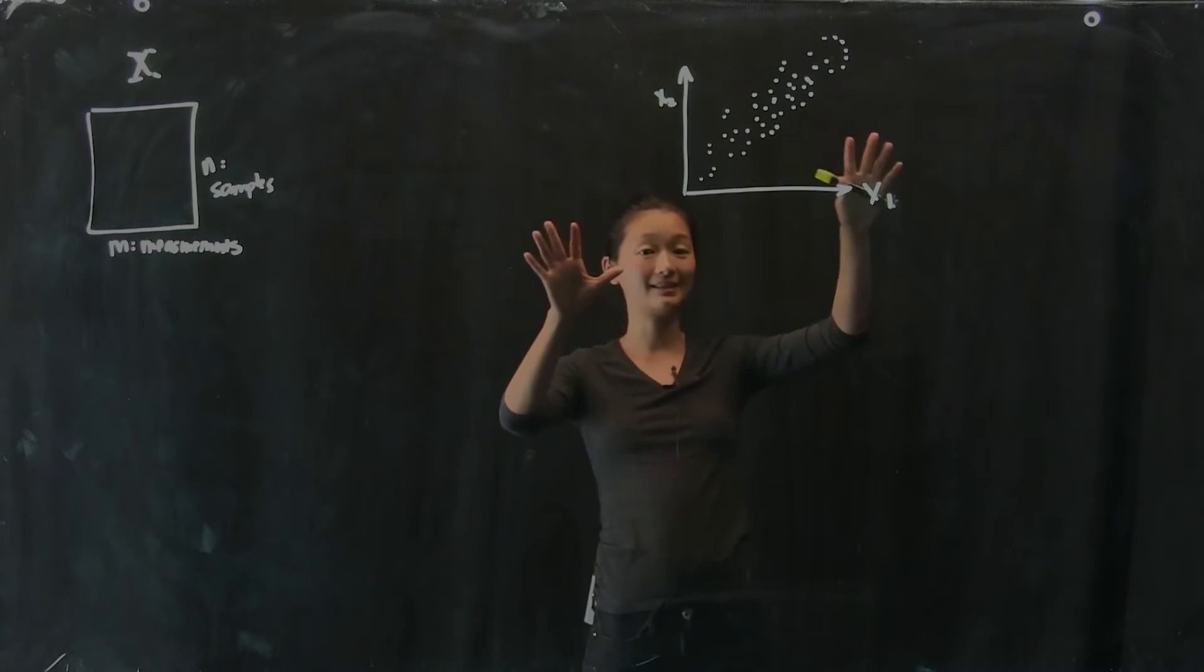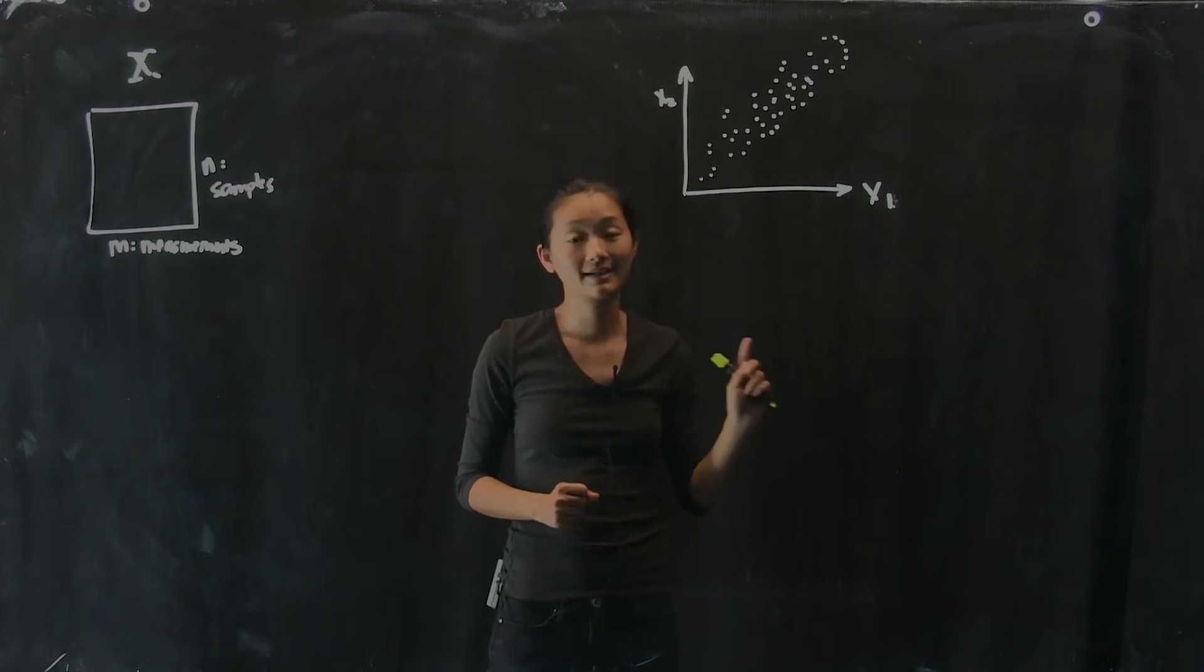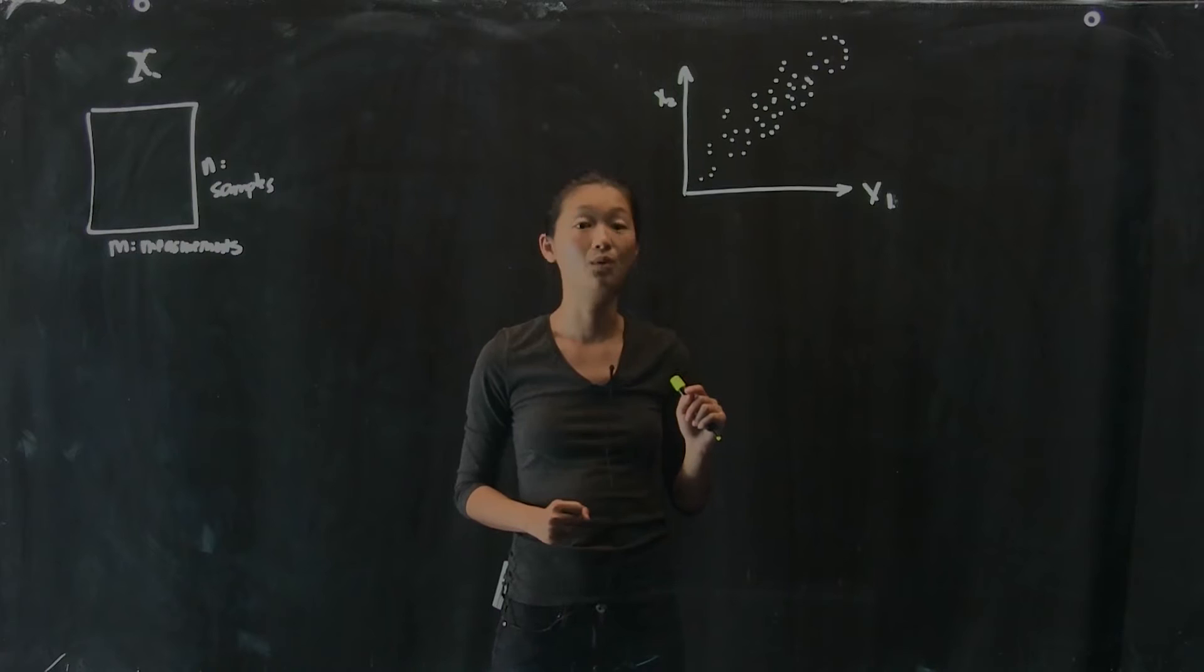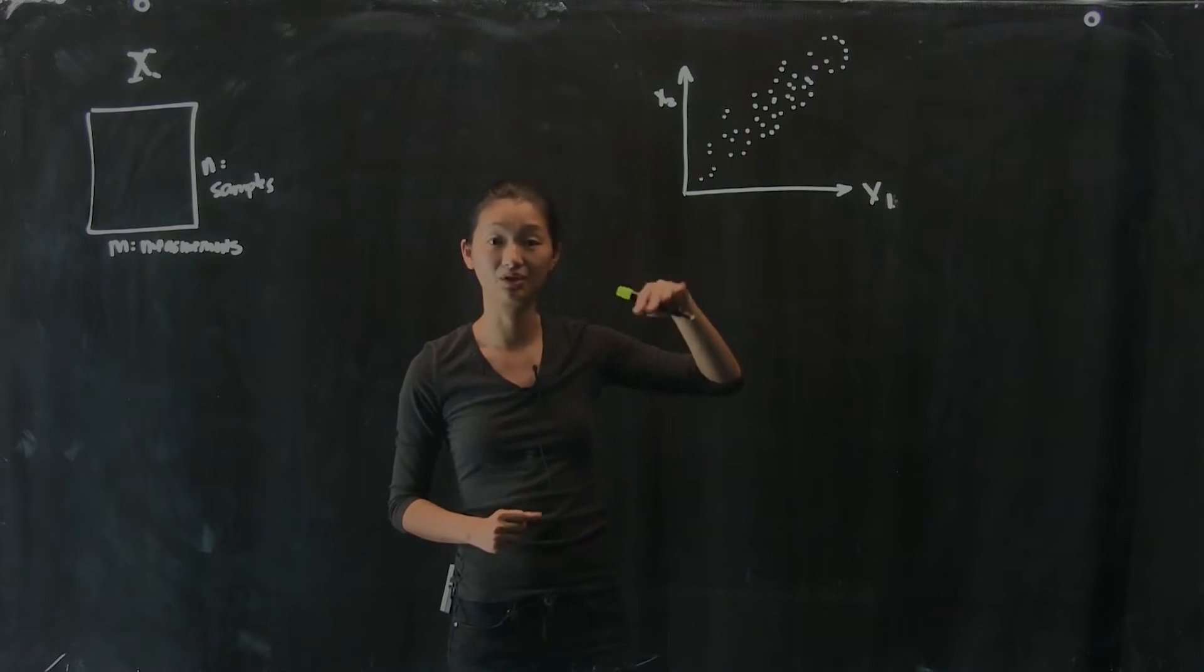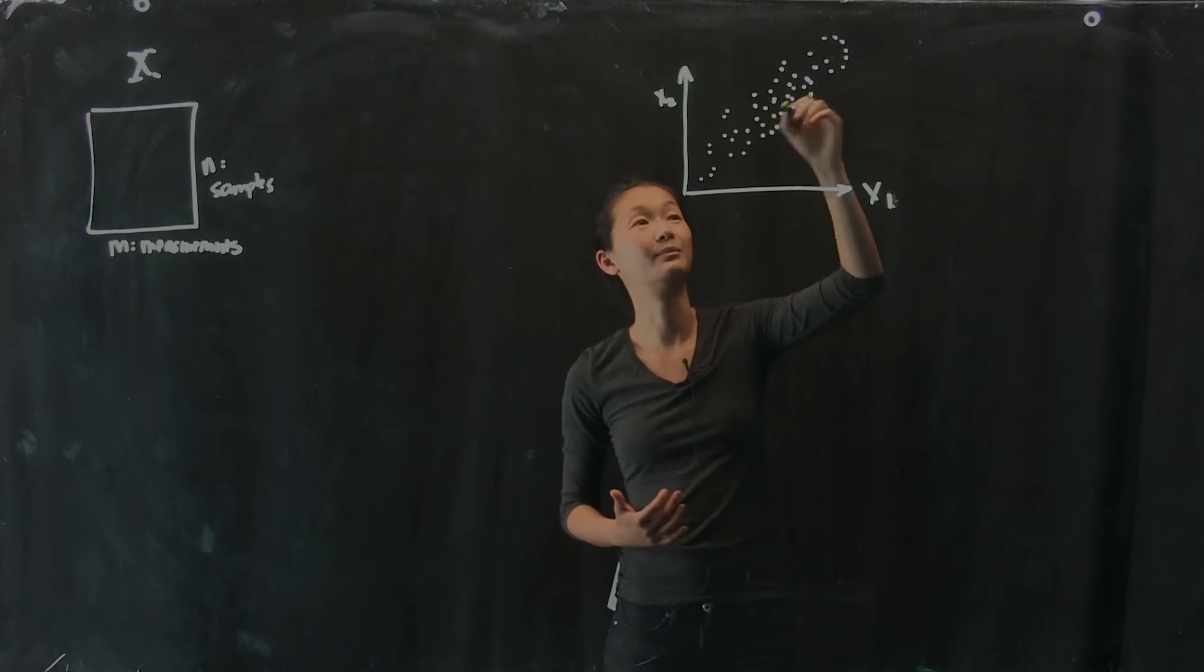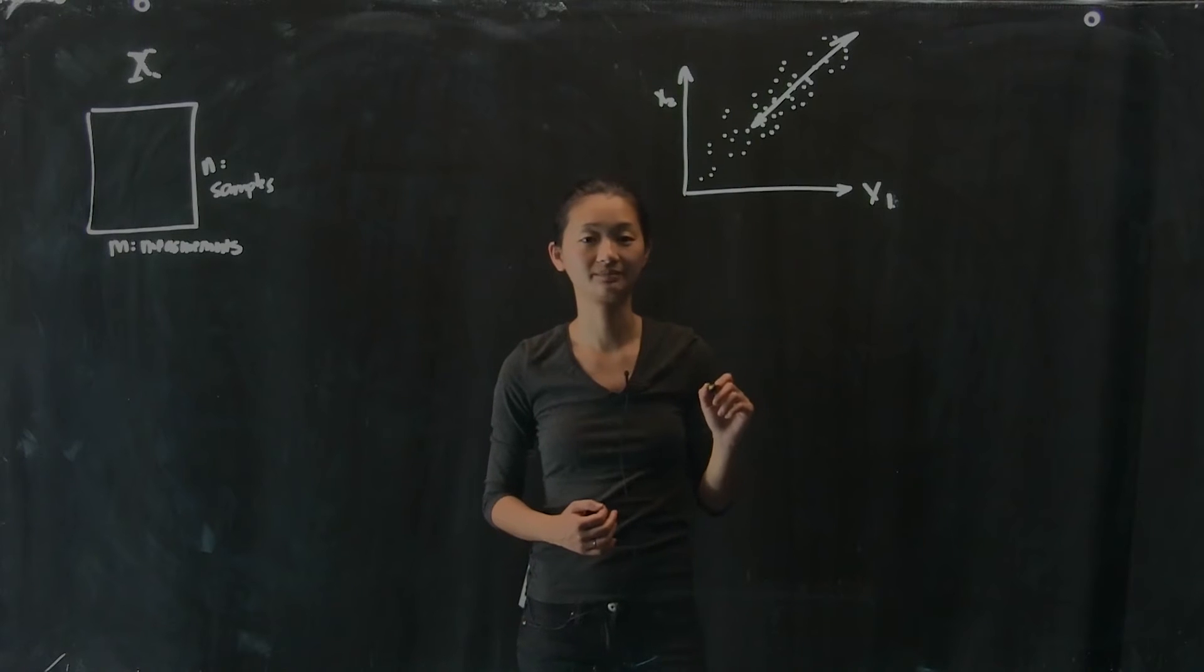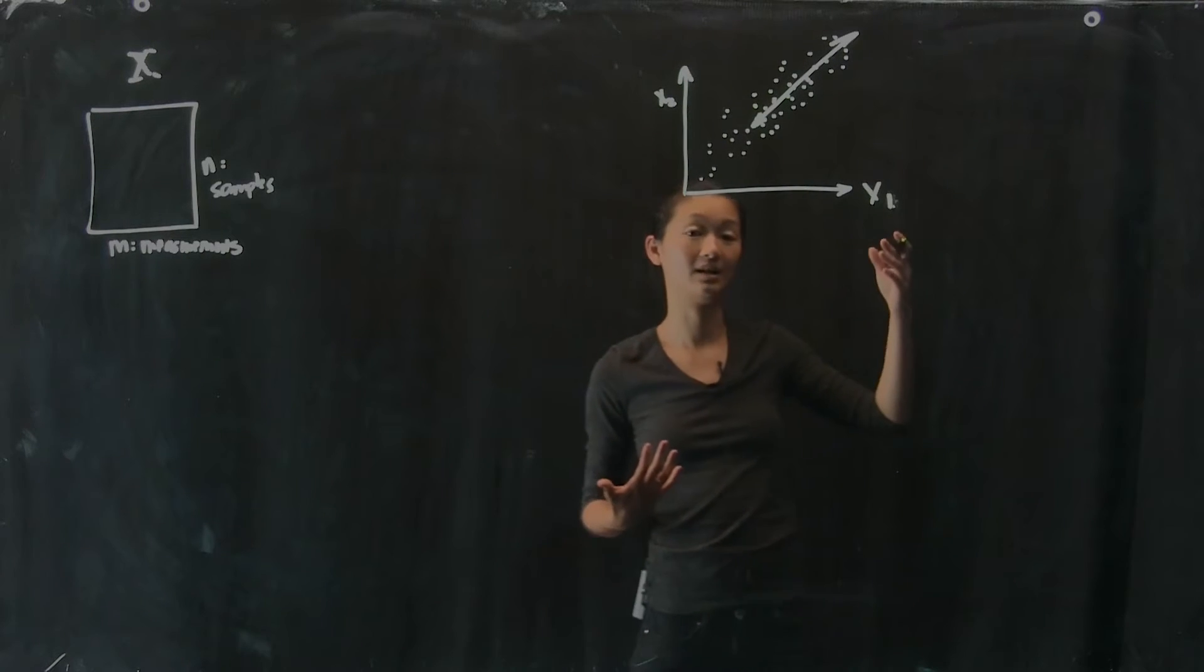So instead of explaining this data set using two measurements, I can ask the question, if I only had one dimension to explain this data, what would that dimension be? Now, if you just kind of look at this picture and intuit it, you would say, oh, most of the variation in the data is along this direction. And in fact, that is the intuition behind principal components analysis.